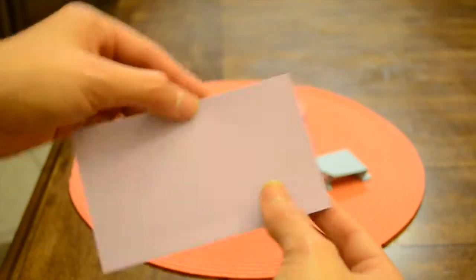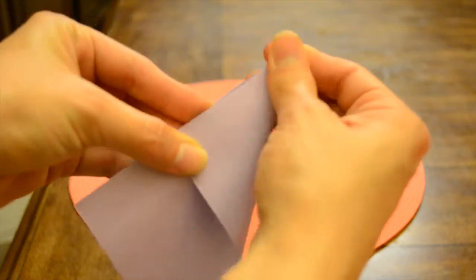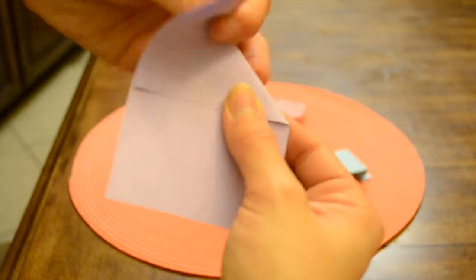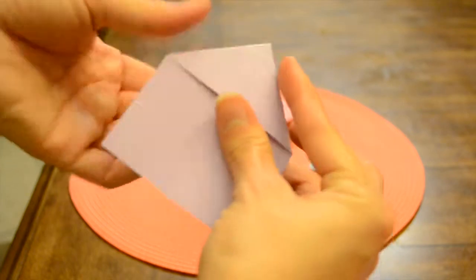First, we're going to start with an index paper. Grab one corner and fold it towards the middle, and repeat for the other side. Refold all the sides just to make sure you have a good fold.